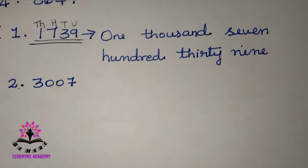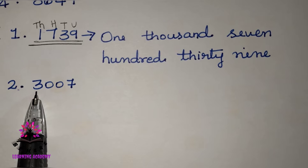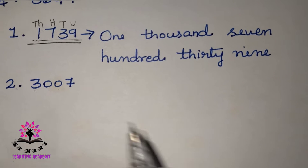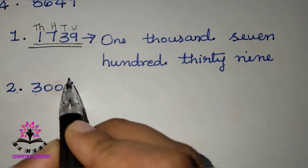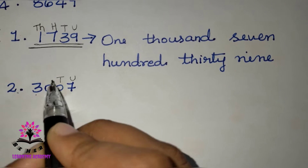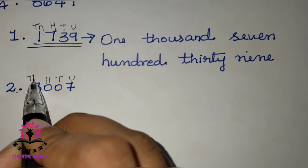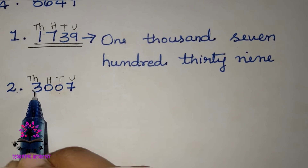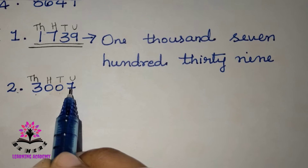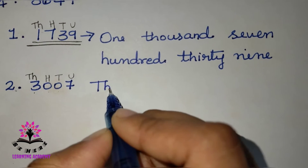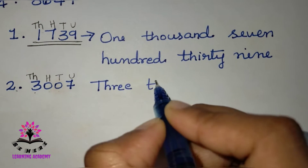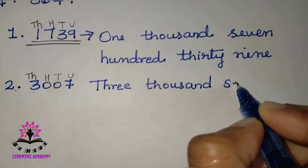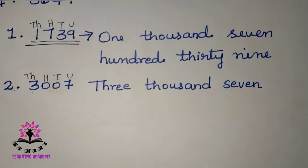The second question: 3007. How to read this number? First write the places — units, tens, hundreds, thousands. Since there is a zero in the middle, we read it as three thousand and seven. The answer is three thousand and seven.